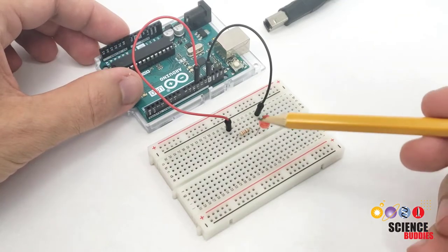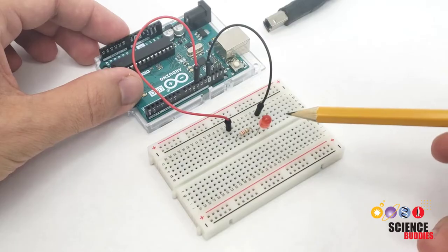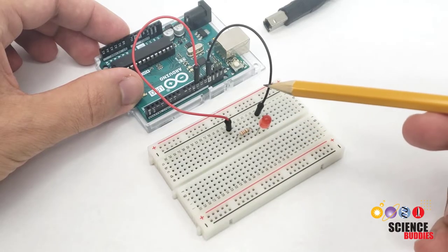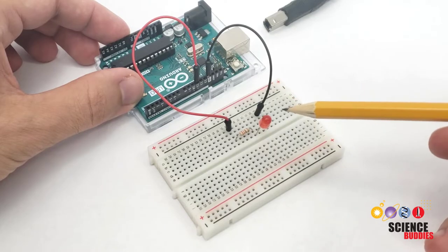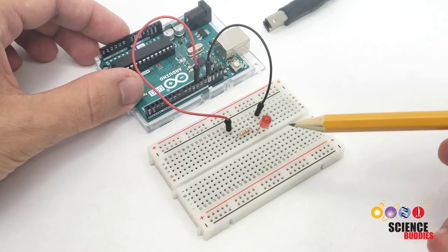In this video, you'll learn how to troubleshoot or debug an Arduino circuit when it's not working as expected. Here, I have a circuit built with an LED connected to my Arduino, and I'm running code that should be making the LED blink on and off. But as you can see, the LED isn't lighting up at all.